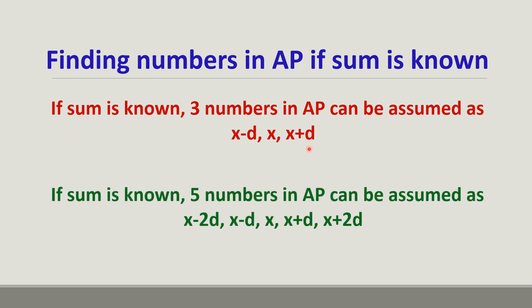Similarly, if the sum is known, 5 numbers in AP can be assumed as x − 2D, x − D, x, x + D, and x + 2D. These are the five terms. The number just before x is x − D, and the number before that is x − 2D. Similarly, after x comes x + D and then x + 2D. That is how we can find five numbers in an arithmetic progression if the sum is given.